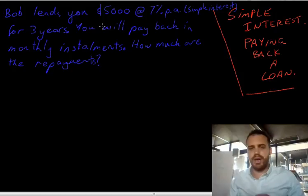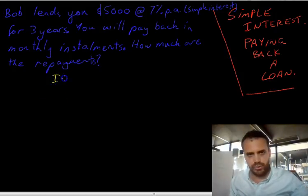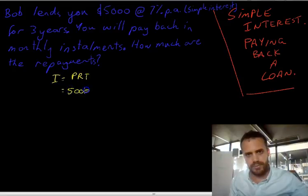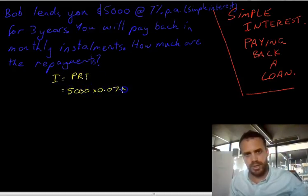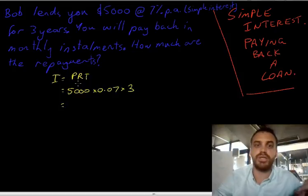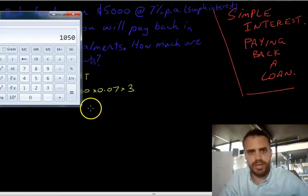First, we need to figure out how much we have to pay Bob back. We can use our simple interest formula: I equals PRT. The principal is $5,000, at 7% per annum — 0.07 — and the time is three years. You can type that into your calculator, and that'll be how much interest the loan earned. The calculator gives us $1,050.